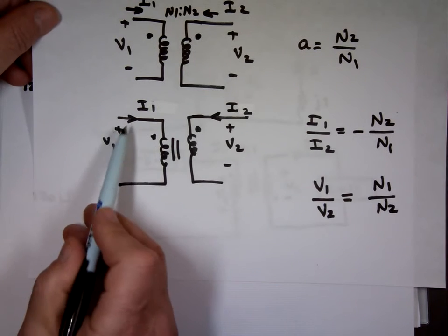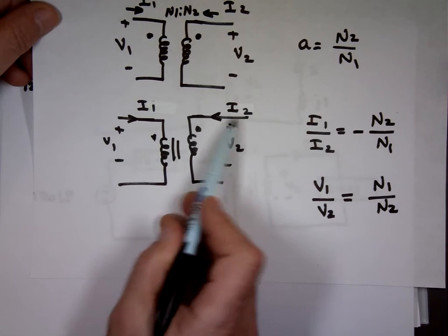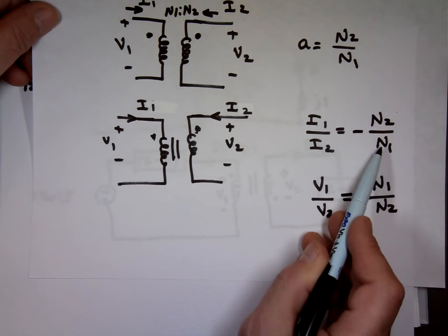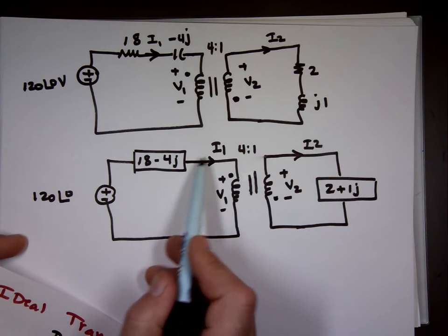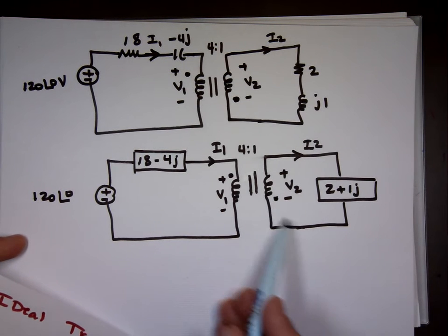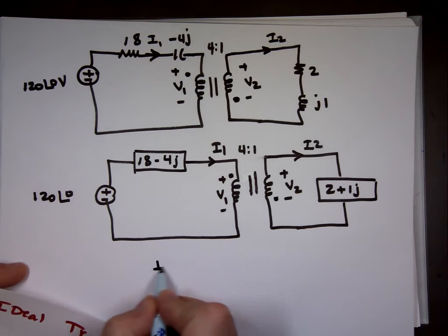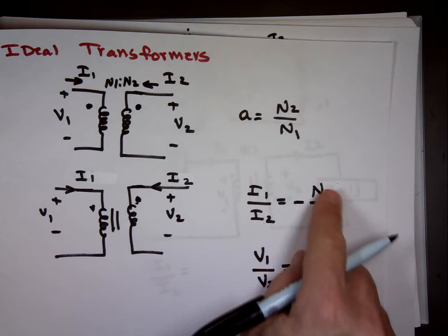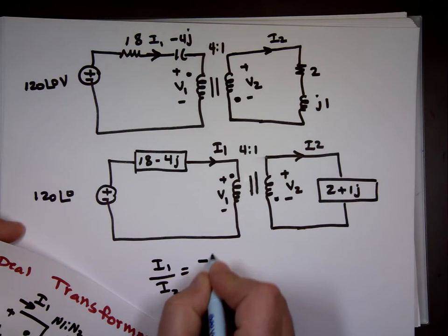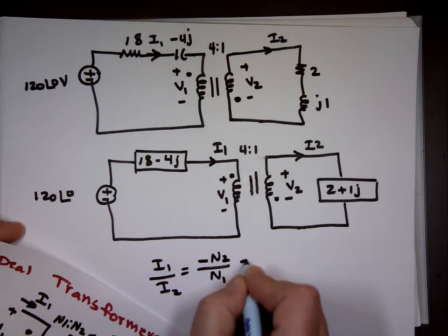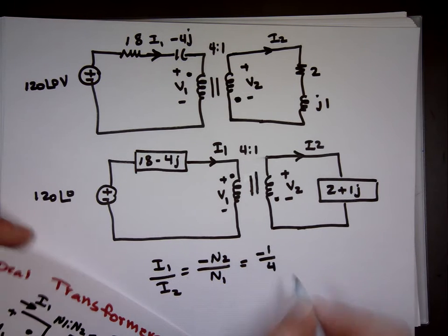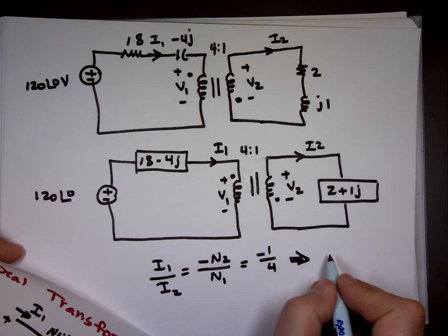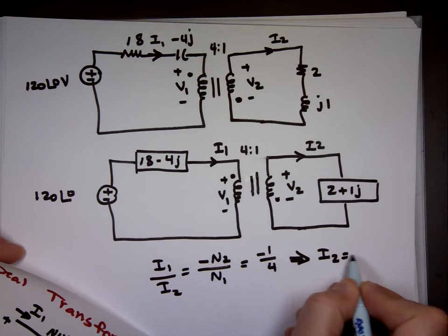Both currents are entering the dot here, just as in the previous case, so the ratio of I₁ to I₂ is still negative n2 to n1, which is negative 1 over 4. Cross-multiplying gives us I₂ equals negative 4 times I₁.